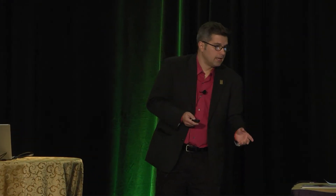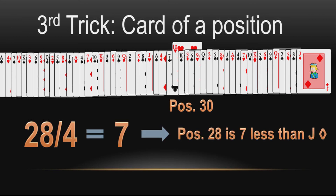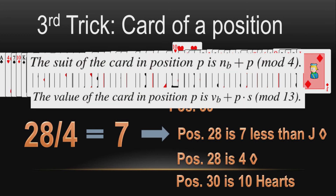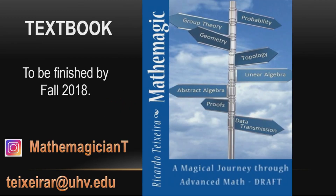I put a paper in the gift exchange which describes this more mathematically. This is the lemma: you have the position of a card. Now let's talk about the card at a given position — for example, position 30. You take the previous number that is divisible by 4, which is 28. Position 28 is seven less than jack of diamonds, so position 28 is four of diamonds. Then add two more positions to get the ten of hearts. This trick will also be available in the book. Thank you.